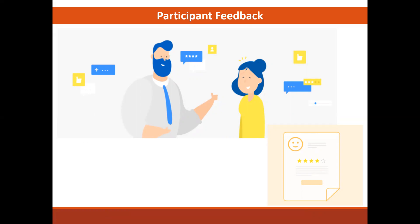Participants can evaluate workers on content items by providing ratings, comments, or both, and respond to a questionnaire to provide a 360-degree evaluation. Participant feedback is recorded as part of the official performance evaluation. By including a variety of participants who have worked with the worker, the manager can get a broader view of the worker's performance to help in the evaluation.